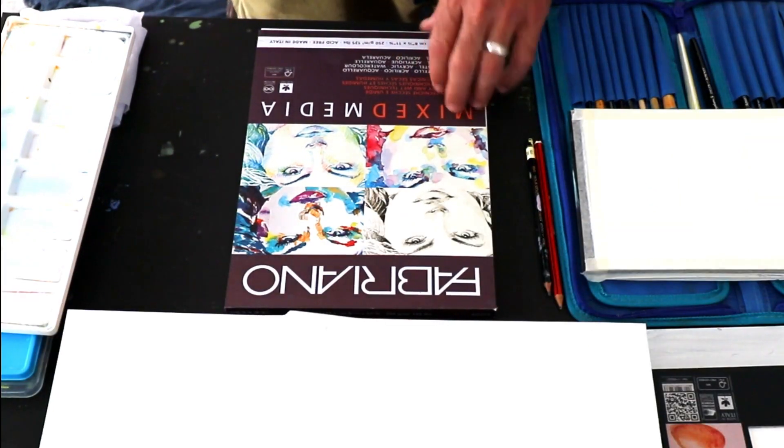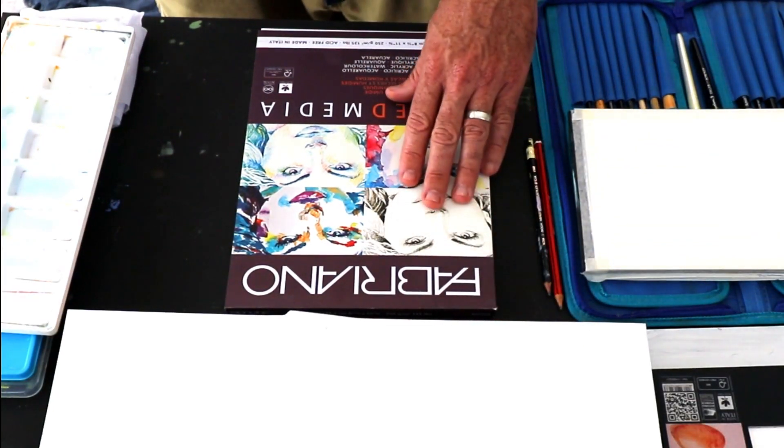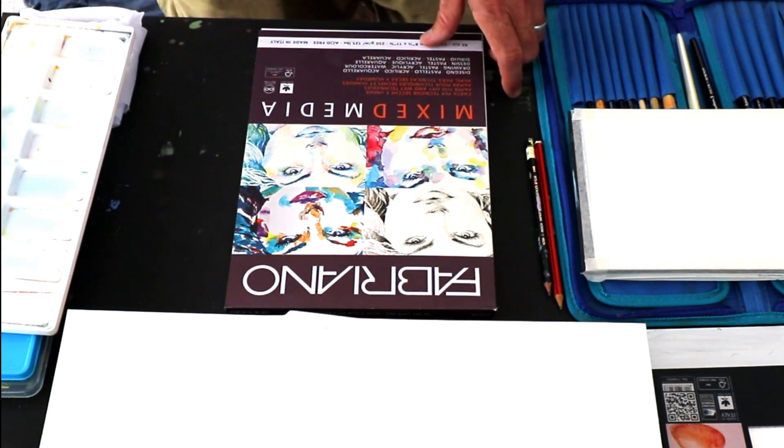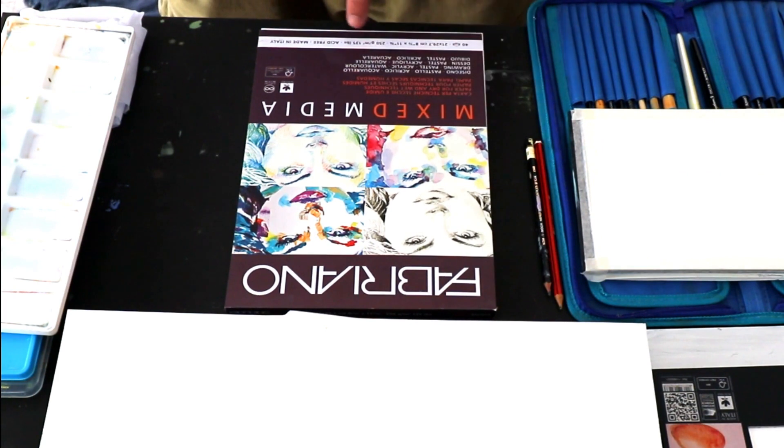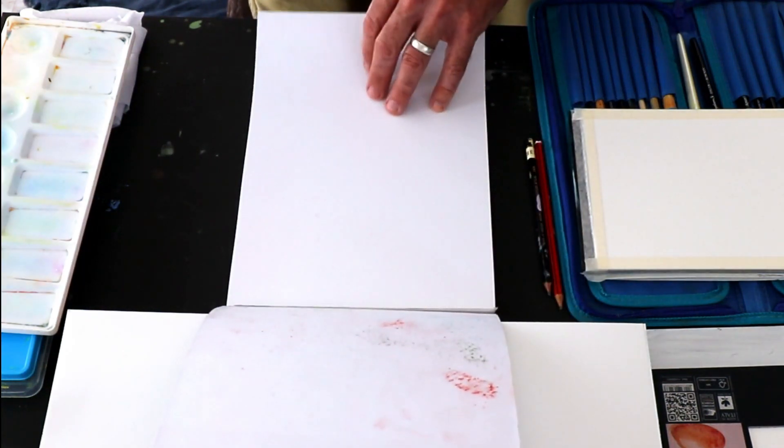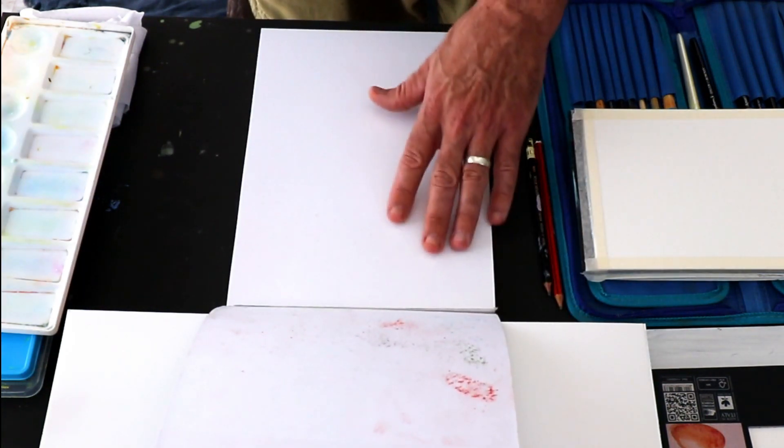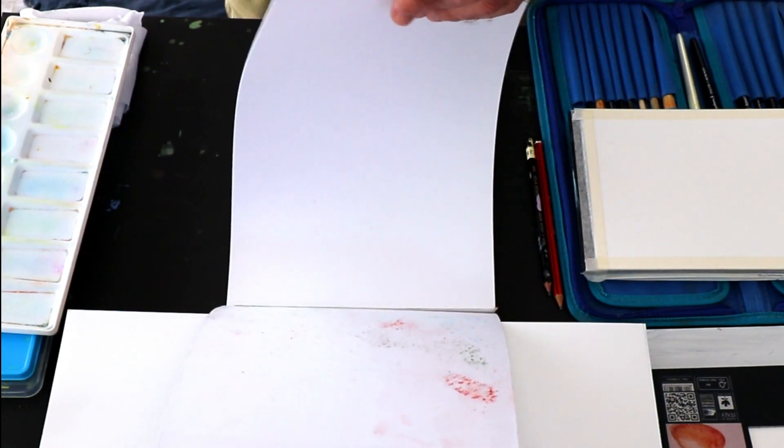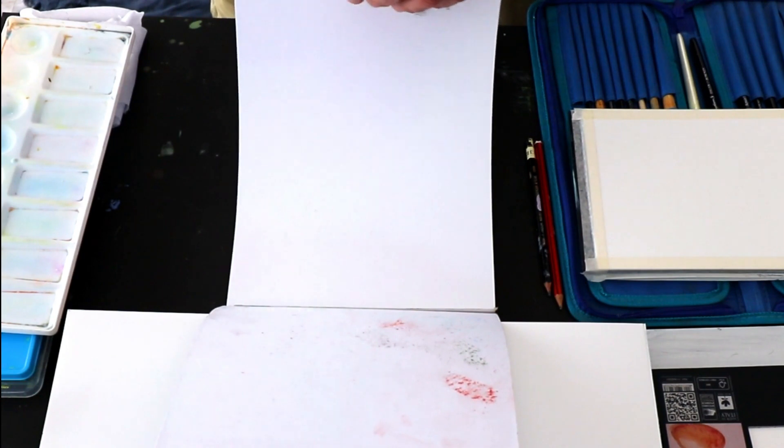This is also a Fabriano paper. It's their mixed media range. Not quite as heavy. This is a 250 gram or 135 pounds acid free paper, but also slightly grainy as well. There's a bit of a tooth there and you'll be able to use this for gouache.